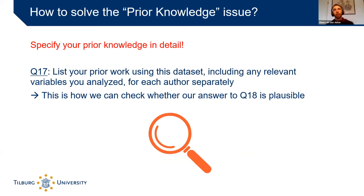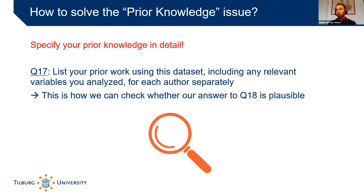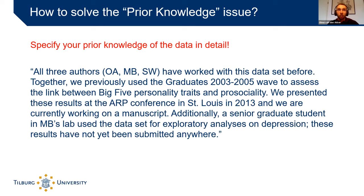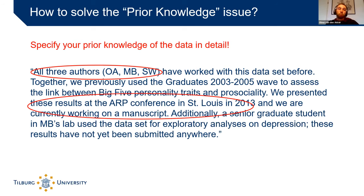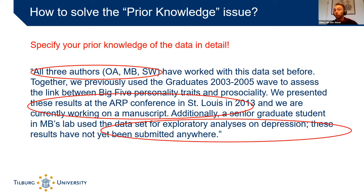There's also the prior knowledge issue. How do other people know you're not using prior knowledge to choose your analysis? If you already know A is positively associated with B, testing that hypothesis doesn't make sense. So our template asks: what is your prior knowledge about the dataset? You should name any variables you've previously analyzed, note any associations you found, consider the consequences for your current hypothesis, and state whether you'll control for it. In our example, we included a control variable because of prior knowledge suspicion. An accompanying item asks you to list prior work using the dataset — including publications and talks — for each author separately.